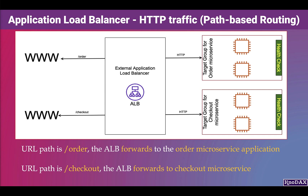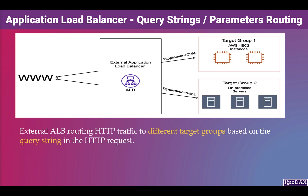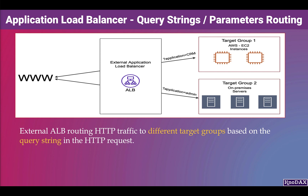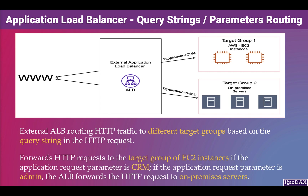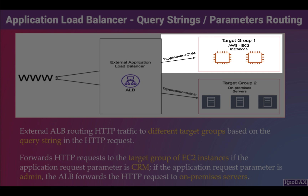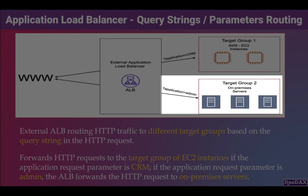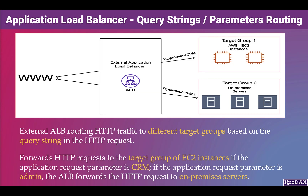Now let's look at how Application Load Balancer forwards traffic using query string or parameter-based routing. In this example, an External Application Load Balancer routes HTTP traffic to different target groups based on the query string. If the Application Request Parameter is CRM, the ALB forwards to the target group of EC2 instances. If the parameter is admin, it forwards to on-premises servers.